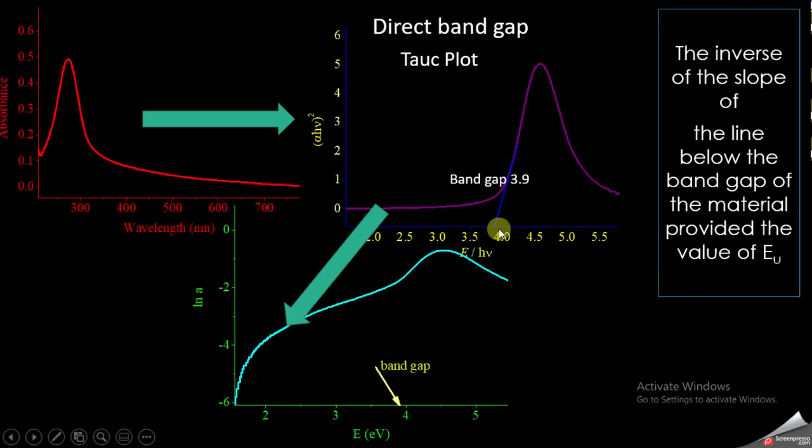From that plot, we can get the band gap of the material. Here, the band gap is about 3.9 electron volts. The first step is to know the band gap of the material before calculating the Urbach energy.